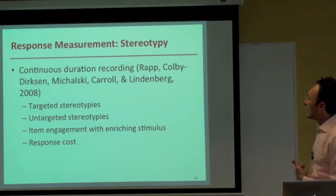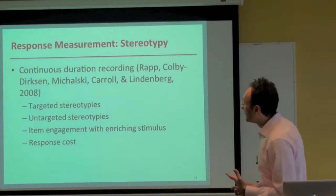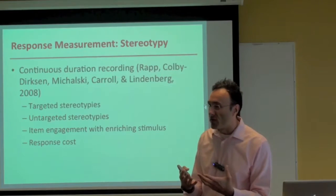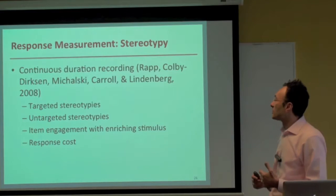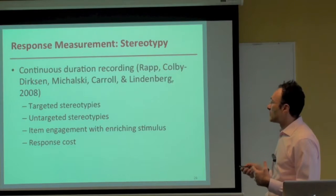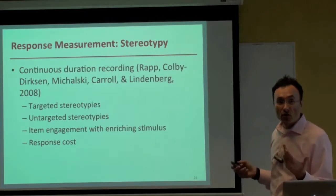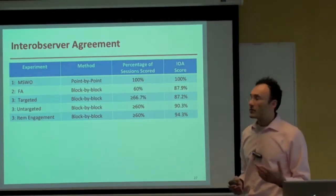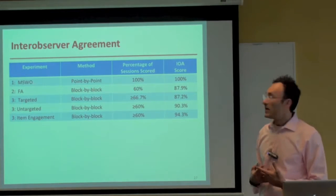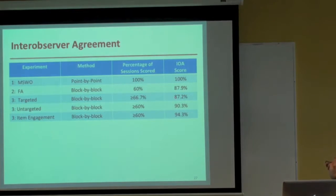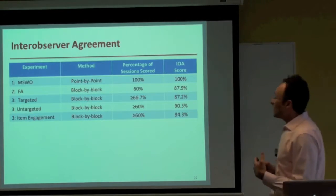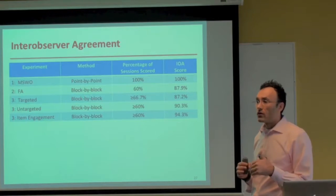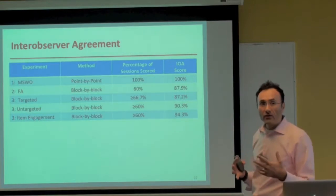For all dependent measures, we collected continuous duration recording on both targeted and untargeted stereotypies, how long each participant engaged with their enriching stimulus, and time spent in response cost. Secondary observers collected data watching at least 60% of all sessions, achieving IOA scores of at least 87.2% — actually quite good for stereotypy behaviors, which tend to have some of the lowest IOA scores in published research.